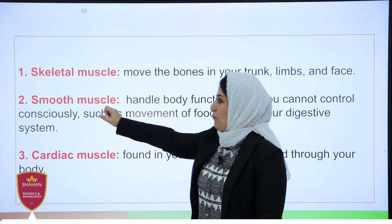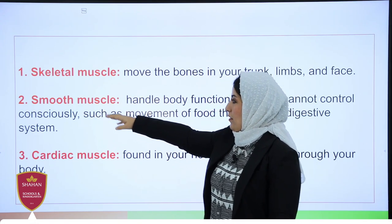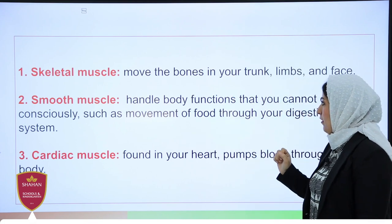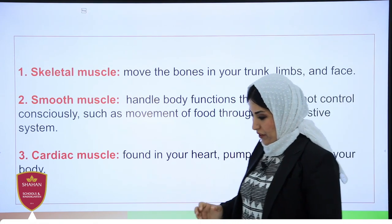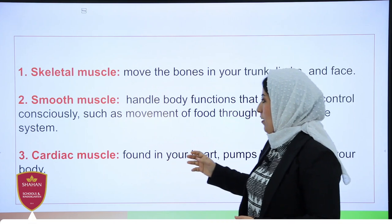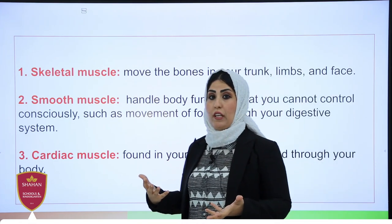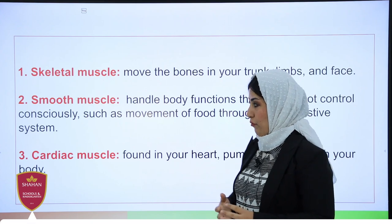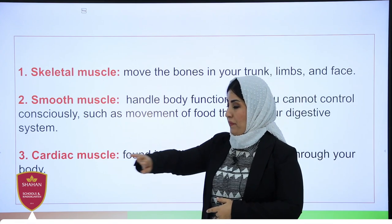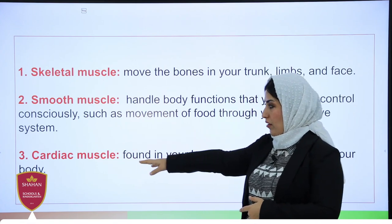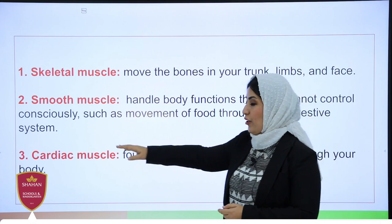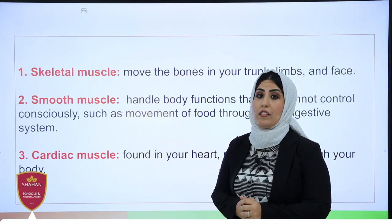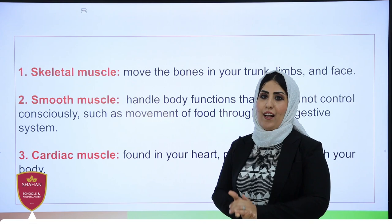The second type of muscle tissue is smooth muscle, which handles body functions that we cannot control consciously, such as the movement of food in our digestive system — they help move the food through our digestive system. The third type of muscle tissue is cardiac muscle, which we can find in our heart and it helps pump blood.